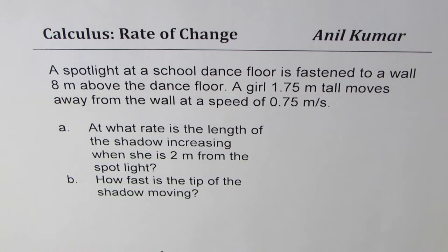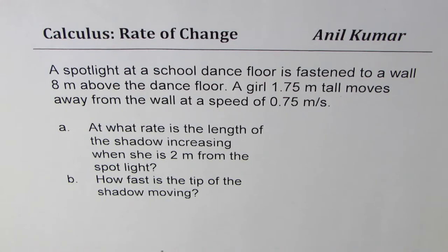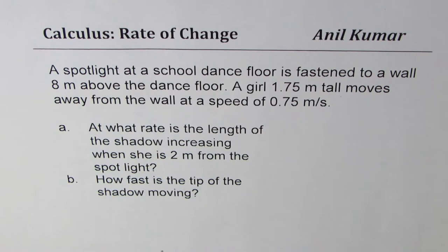I am Anil Kumar sharing with you an excellent question on rate of change. The question is: a spotlight at a school dance floor is fastened to a wall 8 meters above the dance floor. A girl 1.75 meters tall moves away from the wall at a speed of 0.75 meters per second. Part A: at what rate is the length of the shadow increasing when she is 2 meters from the spotlight? Part B: how fast is the tip of the shadow moving?